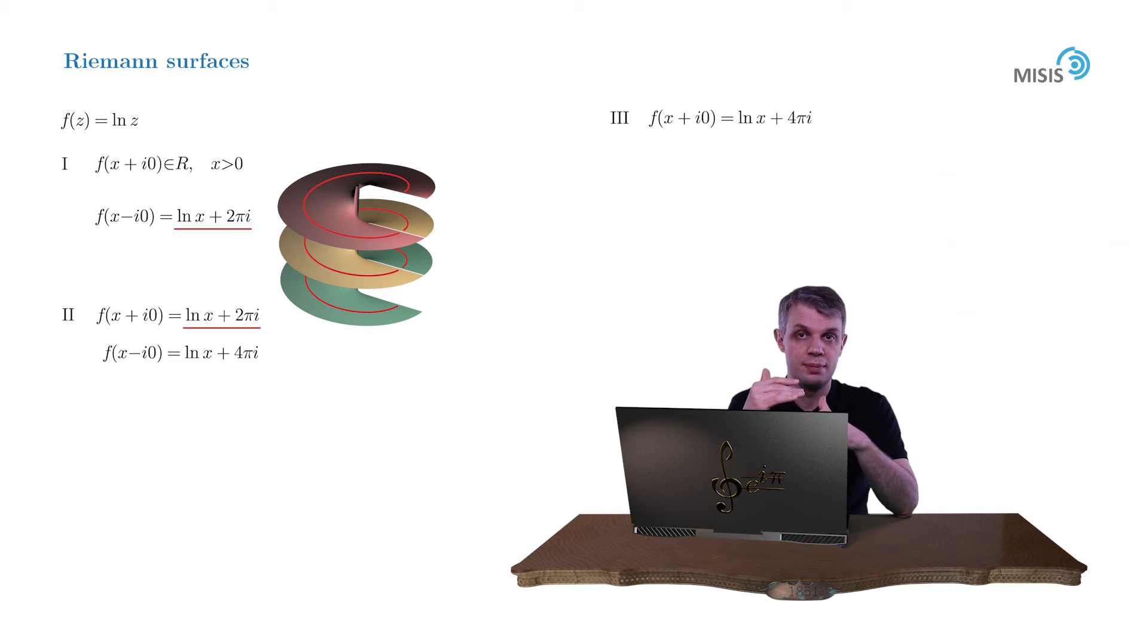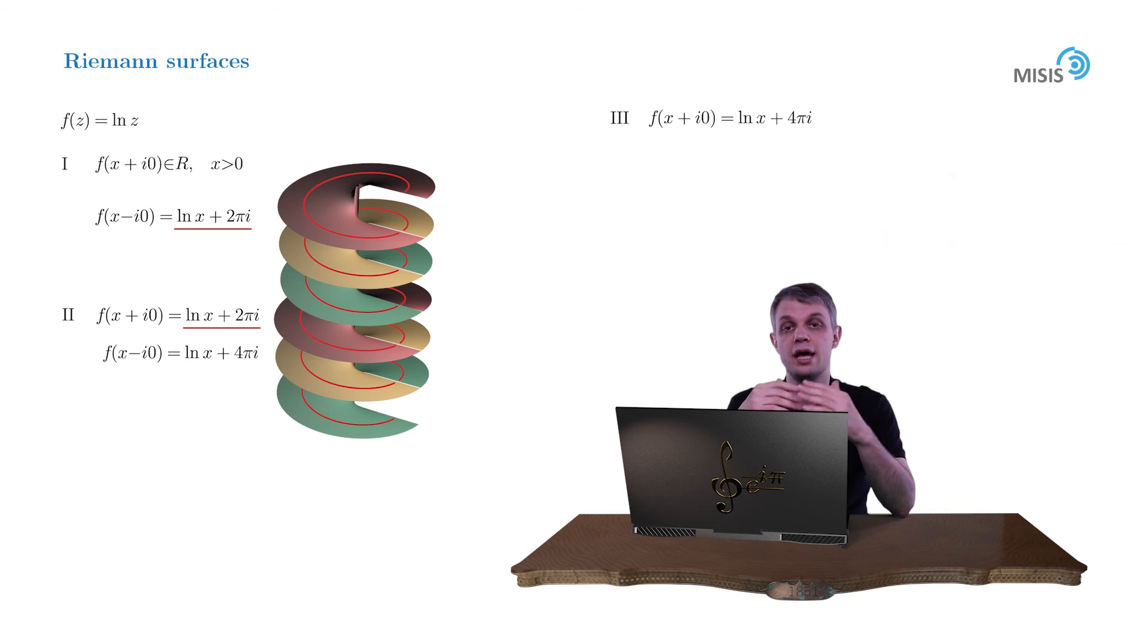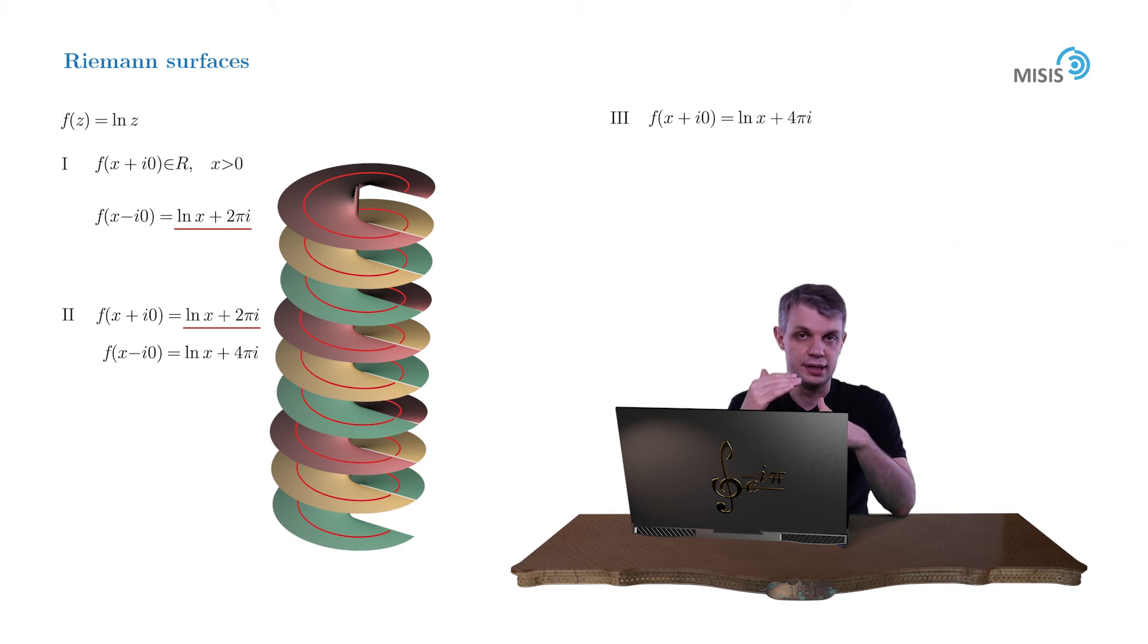And so on we may repeat this procedure step by step, in the end accommodating all the values of our multivalued function log, but at the price of making an infinite tower of complex planes. Each of these complex planes in the tower is called a sheet, or now it's called a Riemann sheet, and the whole structure is called a Riemann surface of the log function.